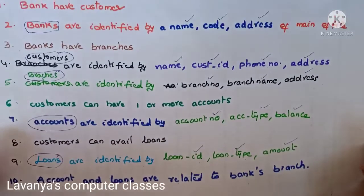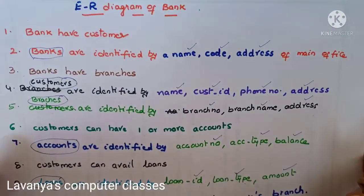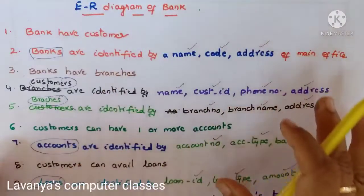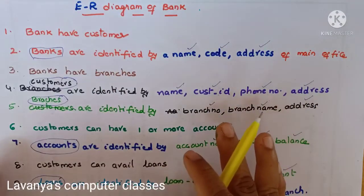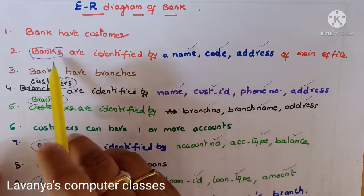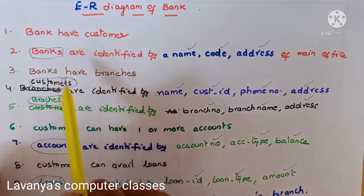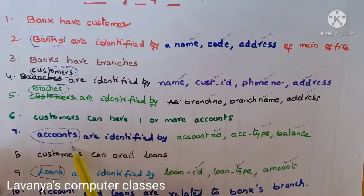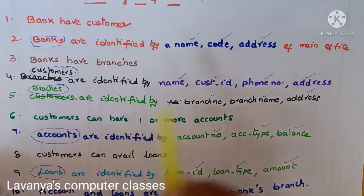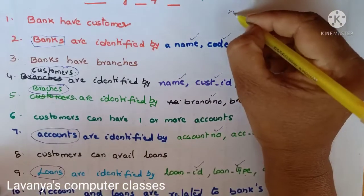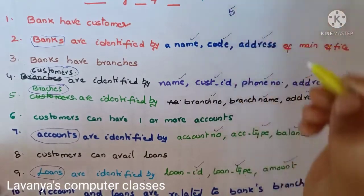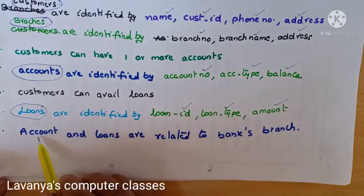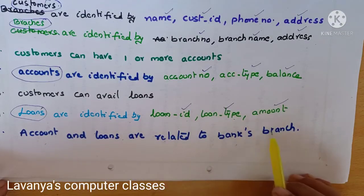This is the complete description of the bank example. From this, we identified five entity sets: bank, customers, branches, accounts, and loans. They also mention a main relationship — accounts and loans are related to the bank's branch.